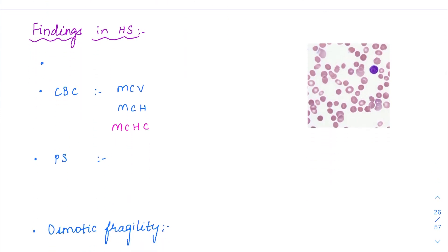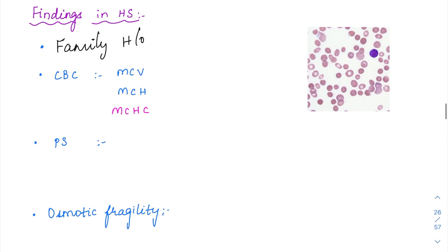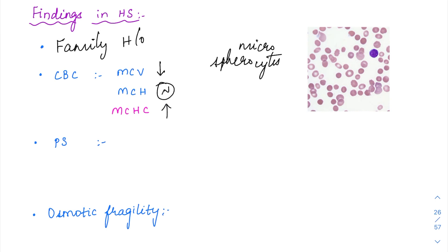Being an autosomal dominant disorder, you will have to elicit a family history since every generation is affected. In the CBC picture, MCV is going to be decreased because spherocytes are smaller — they are microspherocytes. MCH is going to be normal because hemoglobin production is not affected. MCHC is going to be elevated because the hemoglobin level is the same but the volume is decreased, so in this smaller volume all the hemoglobin accumulates — MCHC was normal in megaloblastic anemia, but MCHC is elevated in HS.